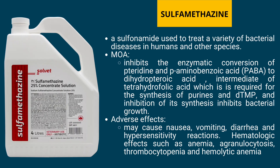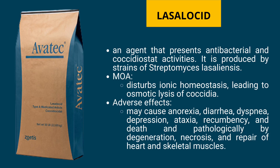Sulfamethazine is a sulfonamide used to treat a variety of bacterial diseases in humans and other species. Its mode of action is to inhibit the enzymatic conversion of pteridine and para-aminobenzoic acid (PABA) to dihydropteroic acid, an intermediate of tetrahydrofolic acid which is required for the synthesis of purines and dTMP. Adverse effects may include nausea, vomiting, diarrhea, and hypersensitivity reactions.